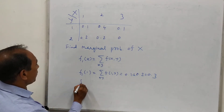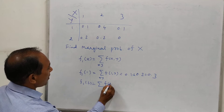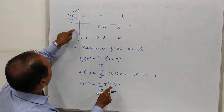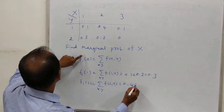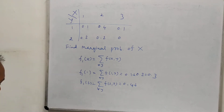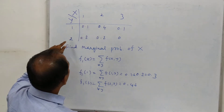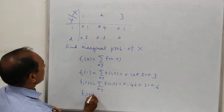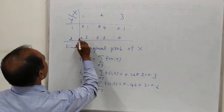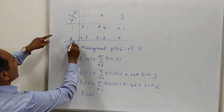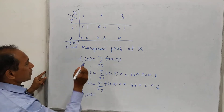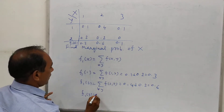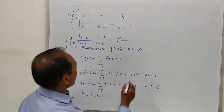Similarly we can find f1(2): it equals sigma f(2,y) for all y, so f(2,1) plus f(2,2), which is 0.4 plus 0.2 equals 0.6. We can also find these values directly from the table, because f1(x) is just the column total. So 0.1 plus 0.2 is 0.3, f1(2) is 0.4 plus 0.2 equals 0.6, and f1(3) equals 0.1.